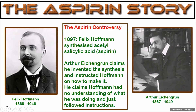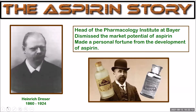In 1897, Felix Hoffman synthesized acetyl salicylic acid. Arthur Eichengren claims, however, that he invented the synthesis and instructed Hoffman how to make it — he claims Hoffman had no idea what he was actually doing and was just following instructions. Heinrich Dresser, head of the Pharmacology Institute, wasn't even keen to pursue aspirin as a product because he was too focused on Bayer's new product heroin, which they were producing from morphine. Yes, heroin was actually produced as a medication in those days.